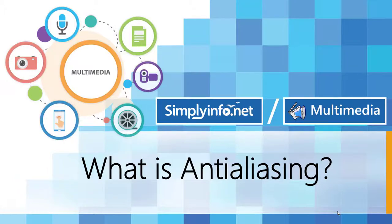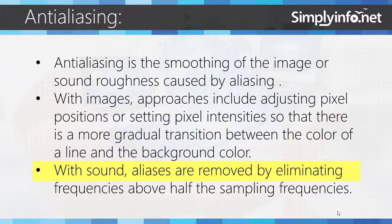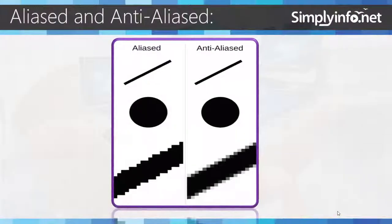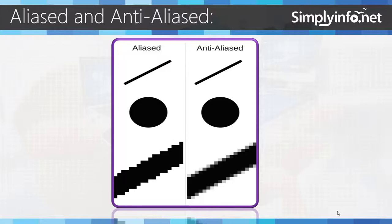Anti-aliasing is the smoothening of the image or sound roughness caused by aliasing. With images, approaches include adjusting pixel position or setting pixel intensity so that there is a more gradual transition between the color of a line and the background color. With sound, aliases are removed by eliminating frequencies above half the sampling frequency. Here is an example of a picture which is aliased and anti-aliased.